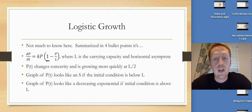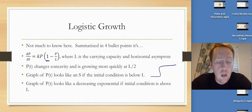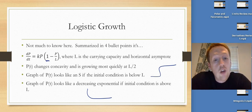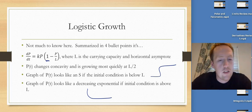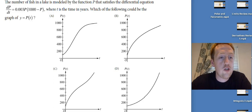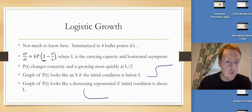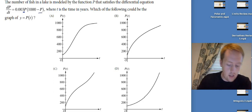We also know that P(t) changes concavity and is growing most quickly at L/2. So half the carrying capacity. The graph of P(t) looks like an S, it looks kind of like that if the initial condition is below L. And the graph of P(t) looks kind of like a decreasing exponential function if the initial condition is above L. So also worth noting then is if our initial condition is above L, it will never change concavity and it will not have a growing most quickly time because it's always decreasing. So I've only got one question here. I'll do a little bit more analysis than we really need to. But the number of fish in a lake is modeled by the function P that satisfies the differential equation. I recognize that looks like a logistic differential equation because there's a P here and a P here.